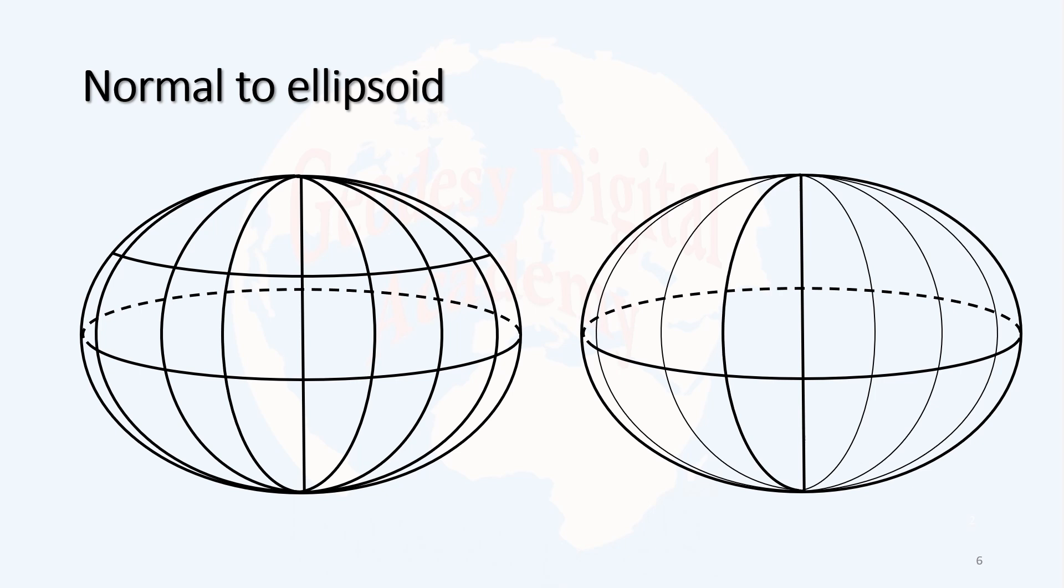But this is not the case for the ellipsoid. Consider a parallel in the northern parts of the ellipsoid, and we plot all normals. We observe that they will converge somewhere along the direction of the semi-minor axis of the ellipsoid, but not at the center.